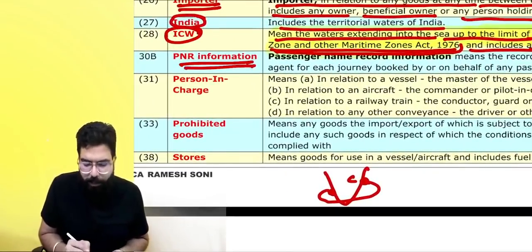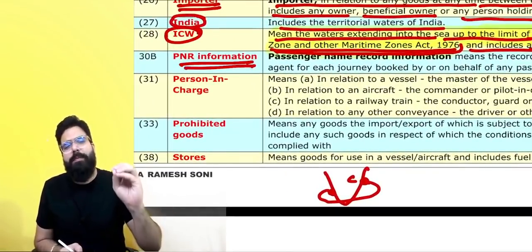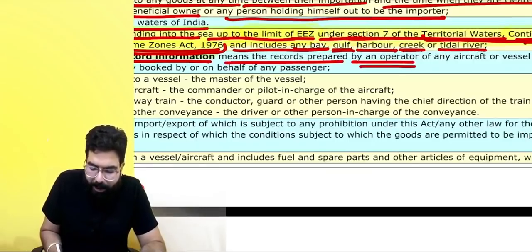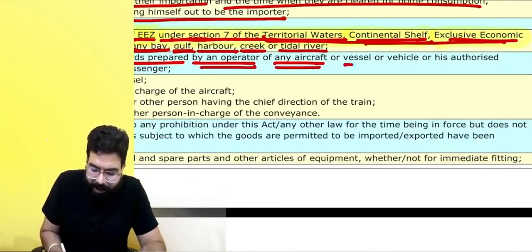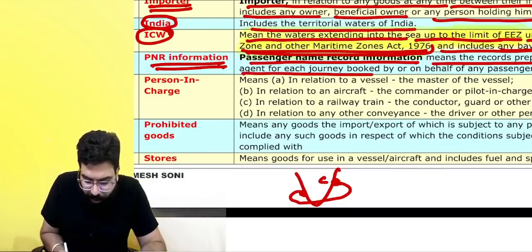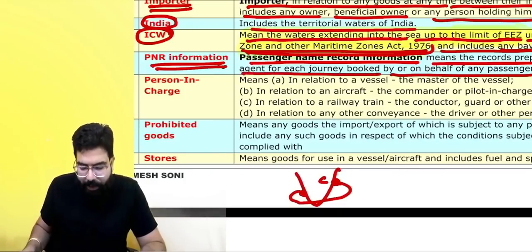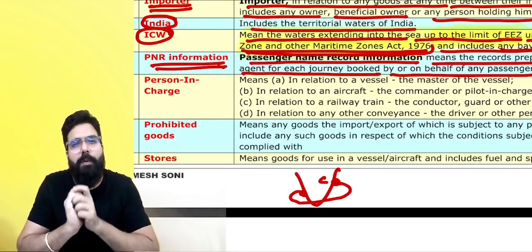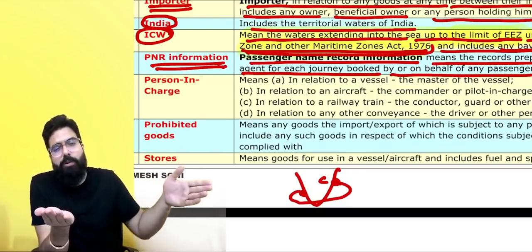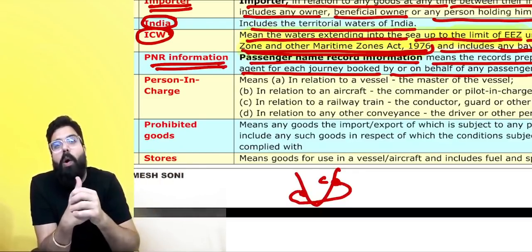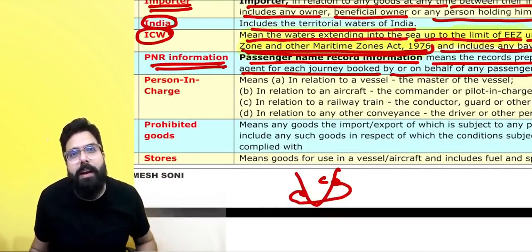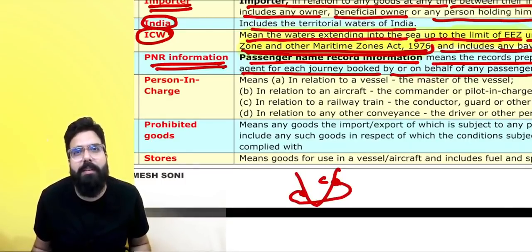What do you mean by PNR information? PNR stands for Passenger Name Record information. Passenger name record information means the record prepared by the operator of the aircraft, vessel, or vehicle — or their authorized agent — for each journey, booked by or on behalf of any passenger. Whenever you are coming from outside India or going from India outside, you have to give PNR information to the officer — details of the crew members and passengers going along with you.